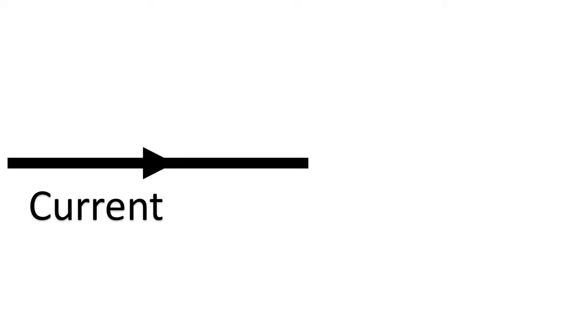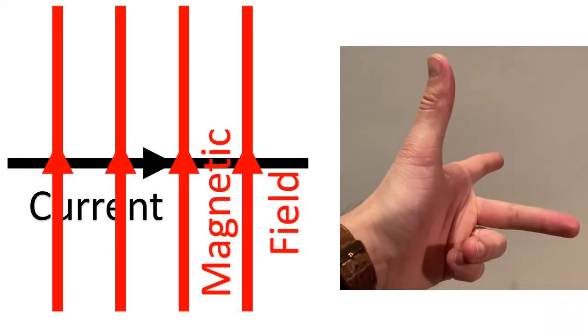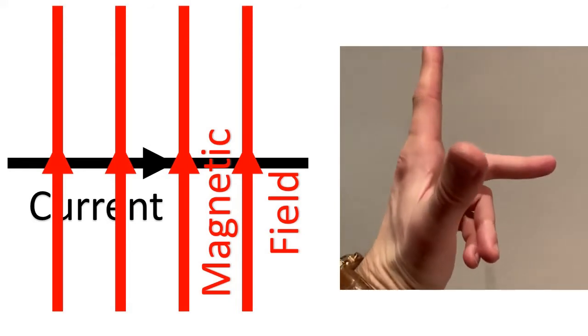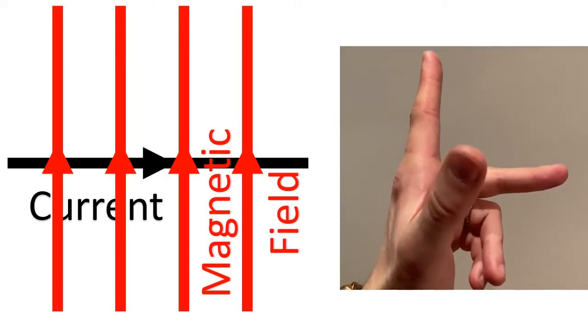Let's see an example or two. If a wire carrying conventional current in this direction, from left to right on the screen, is in a magnetic field flowing upward on the screen, the direction of the force on the wire should be out of the screen, towards your face.